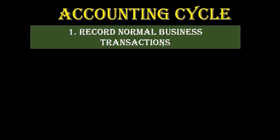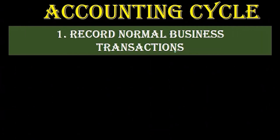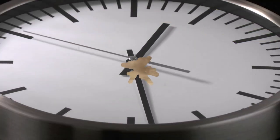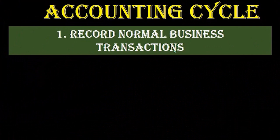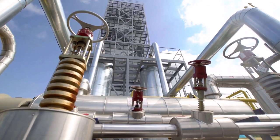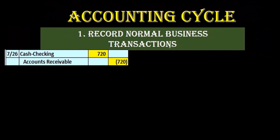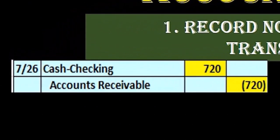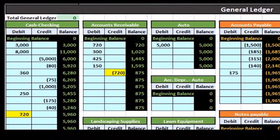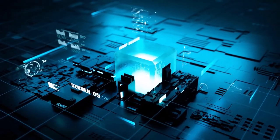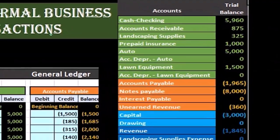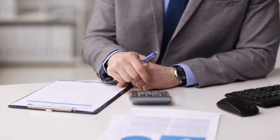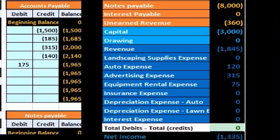Starting off again with step one: record normal business transactions. This entails mainly everything happening throughout the entire month — payroll, accounts receivable, accounts payable, entering all the transactions, bills, invoices. In terms of timing, this step is way bigger than the rest. We're entering normal journal entries, compiling data from financial transactions, and recording those transactions to the general ledger. The general ledger is used to make the trial balance. We might have an automated system — when we make an invoice, a journal entry happens; when we make a bill or write a check, a journal entry is happening. We're recording data throughout the month.